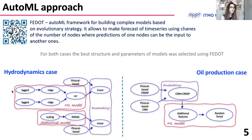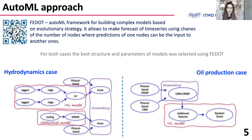In our work, we also used an AutoML approach for selecting the best structure and parameters of our machine learning model. For this task, we used FEDOT, an AutoML framework for building complex models based on evolutionary strategy. It allows focusing on specific time periods and uses chains of nodes where the predictions of one node can be the input to another. The structure of models for both research domains, including the ensemble part, can be seen in the image.